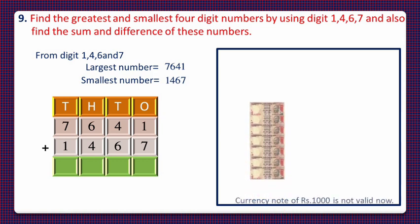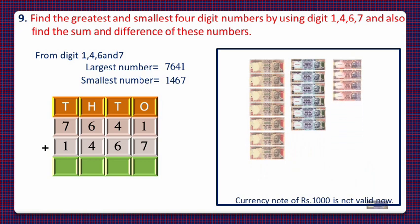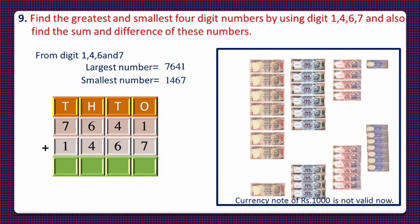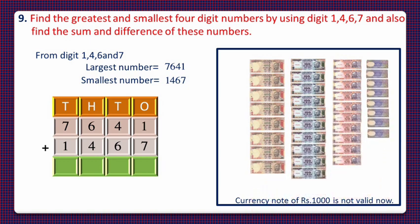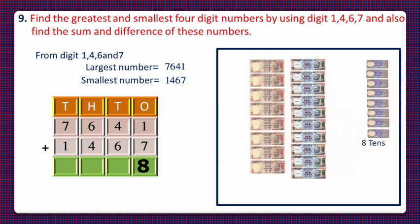For 7641 we'll take 7 thousands, 6 hundreds, 4 tens, and 1 ones. For 1467 we'll take 1 thousand, 4 hundreds, 6 tens, and 7 ones currency notes. First, add the ones: we have 8 ones, so we'll write 8 in the ones column. Now we have 10 ten-rupee notes, and since 10 tens equals 100, we'll take a 100-rupee note instead.